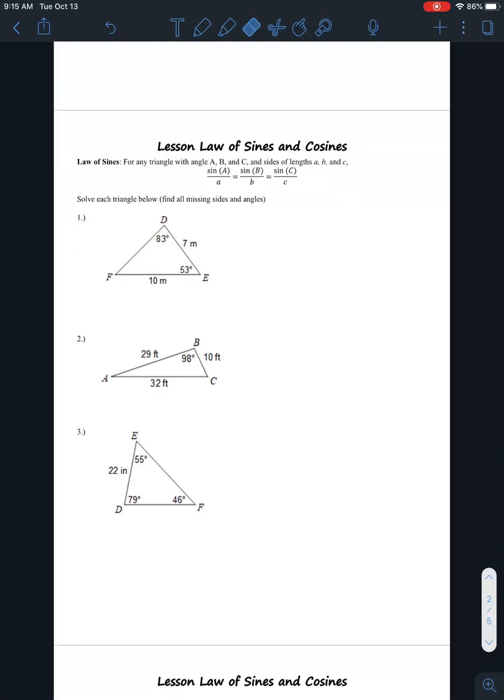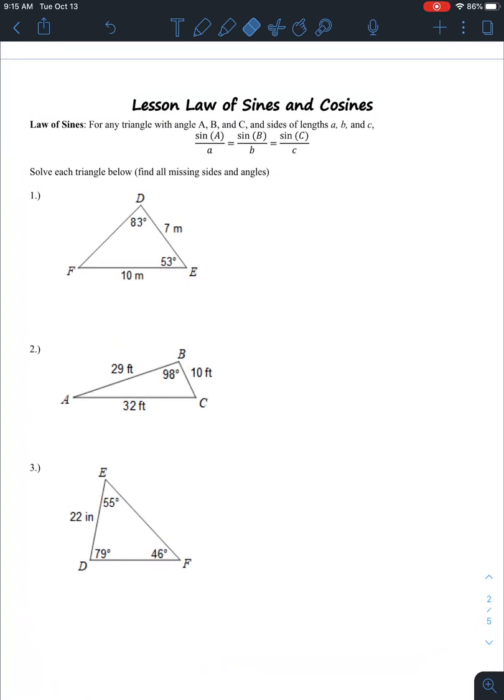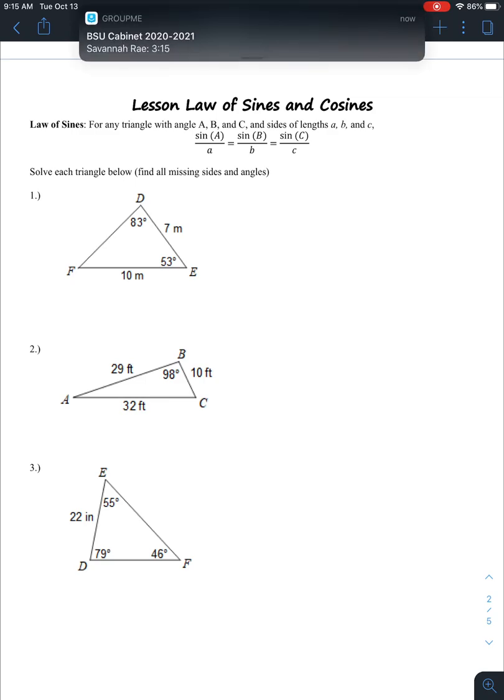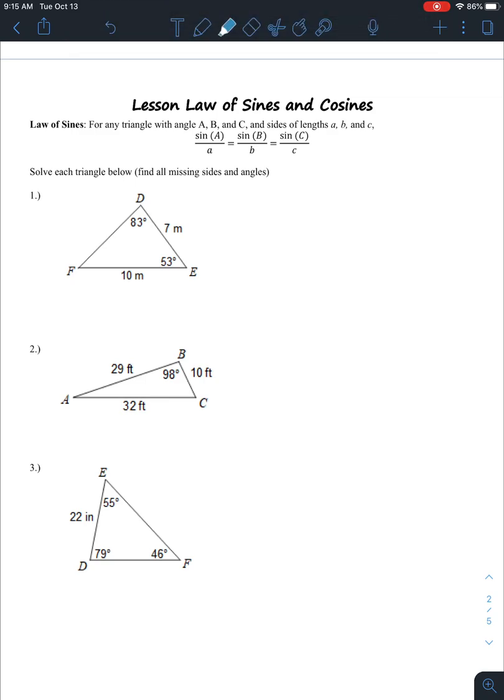Hello, everybody. Today we're going to review the law of sines. So whenever you do the law of sines, you're going to see this proportion here, which is sine of A over A equals sine of B over B, which equals sine of C over C.